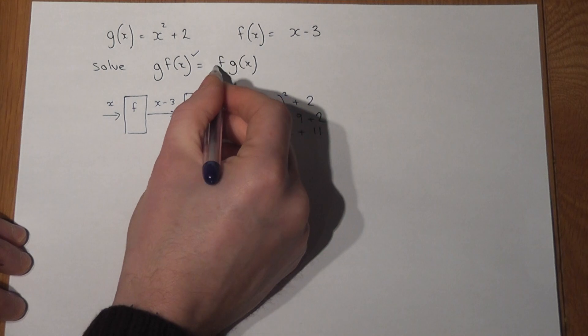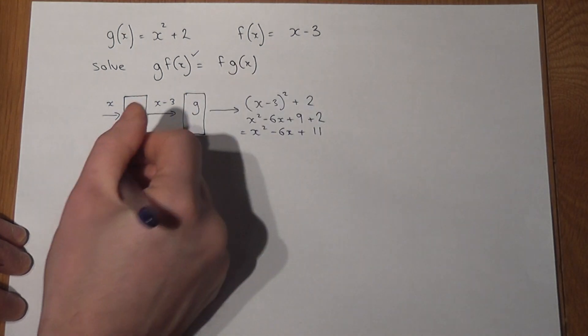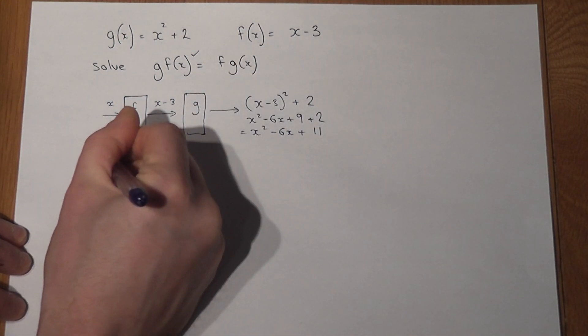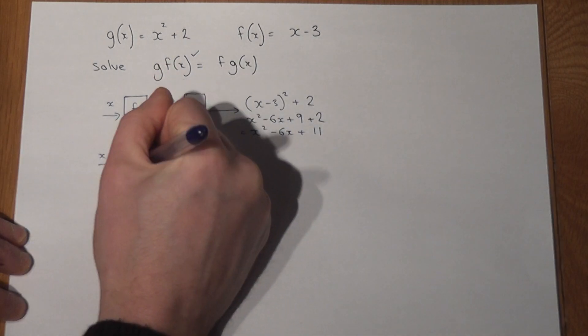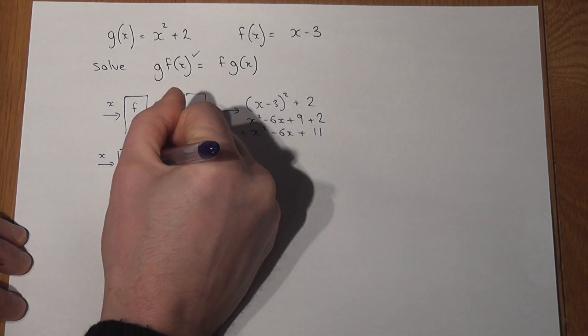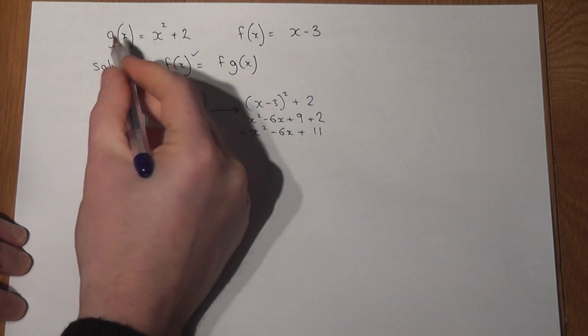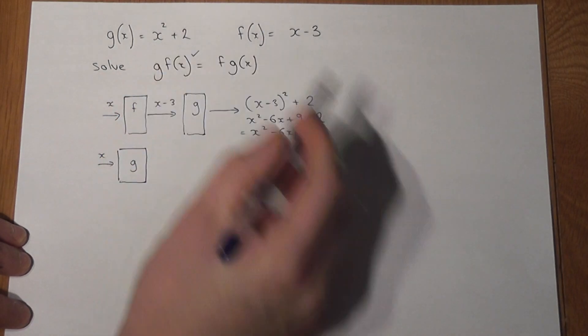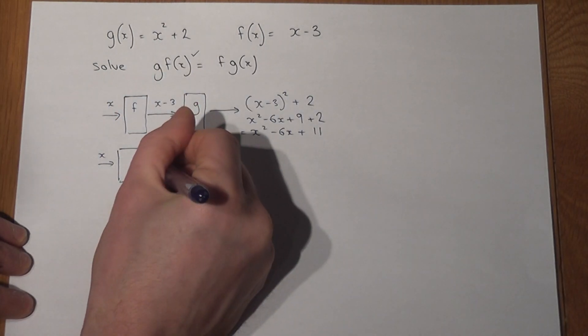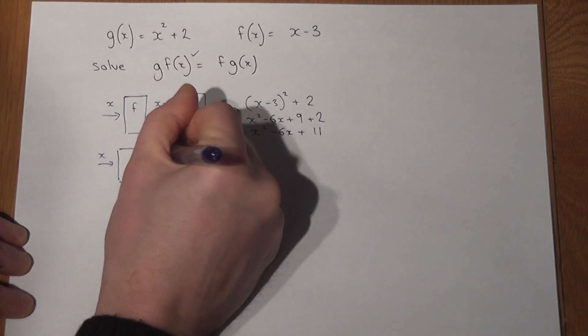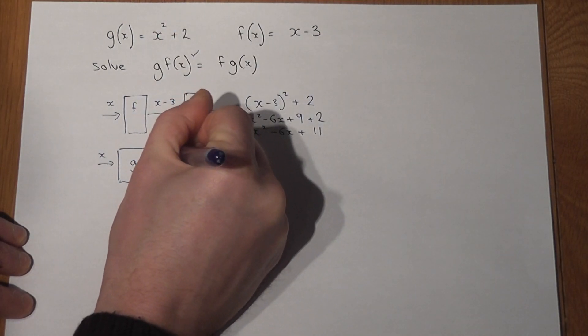Now the right hand side is f g of x. So again the input is x. g happens first of all and it says wherever the input is we square it and add 2. x is the input. This gets squared and we add 2.